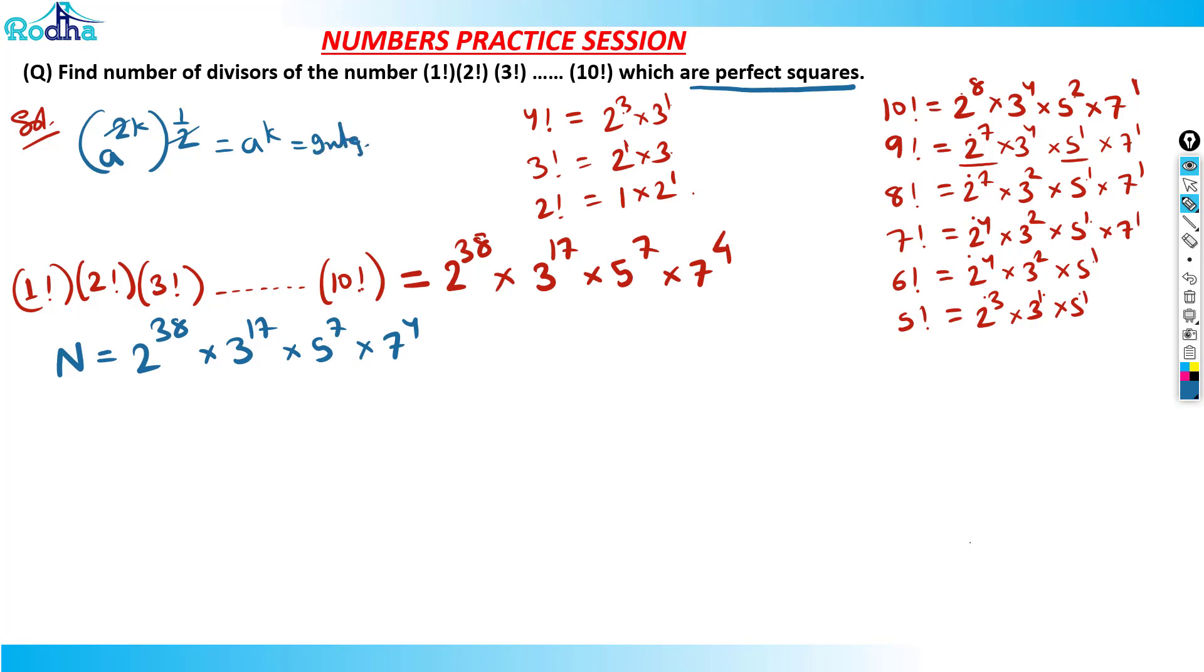So basically the bracket of 2. You just need to understand this. This bracket of 2, like if you do it mentally. If you can think of mentally, it's something like this. 2 raised to 0, 2 raised to 1 till 2 raised to 38. It is like 3 raised to 0, 3 raised to 1 till 3 raised to 17. Then 5 raised to 0, 5 raised to 1, then 5 raised to 7, and then 7 raised to 0 till 7 raised to 4. So basically if you can directly think of this mentally.